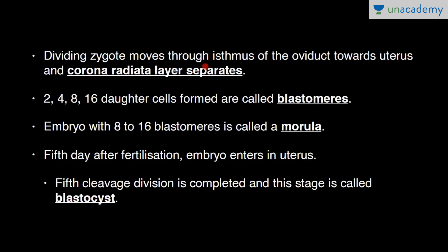The dividing zygote moves through the isthmus of the oviduct toward the uterus, and the corona radiata layer separates. As it moves, 2, 4, 8, and 16 daughter cells called blastomeres are formed through cleavage division. An embryo with 8 to 16 blastomeres is called a morula. On the fifth day after fertilization, the embryo enters the uterus, the fifth cleavage division is completed, and the embryo is now called a blastocyst.